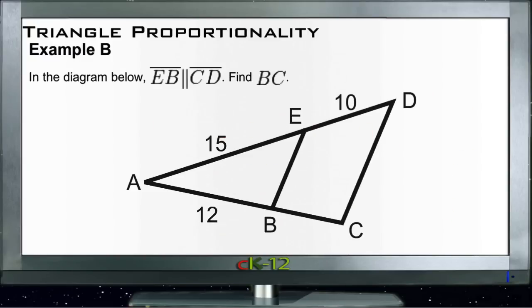Now let's take a look at Example B. Example B says in the diagram below, EB is parallel to CD, so we have this line here is parallel to this line here, and we need to find BC. Well, if these two lines are parallel, then the ratio of ED would be compared to EA would be the same as the ratio of BA compared to CB. So if we say that our missing segment here is X, then if we put the smaller segments on top in a proportional statement, we could say that 10 compares to 15 in the same way that X compares to 12.